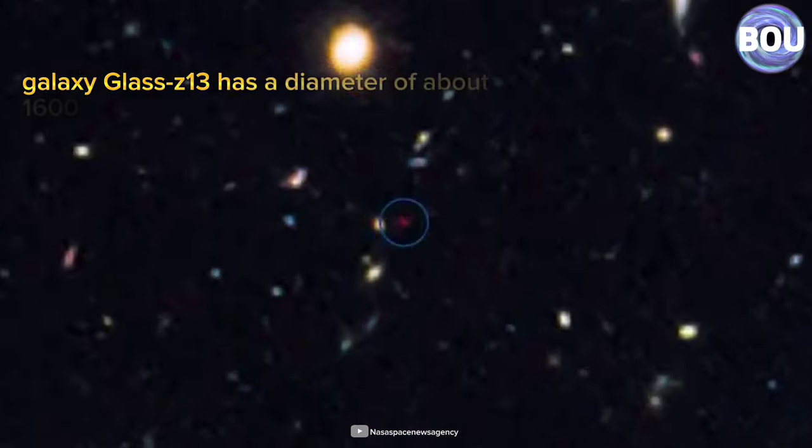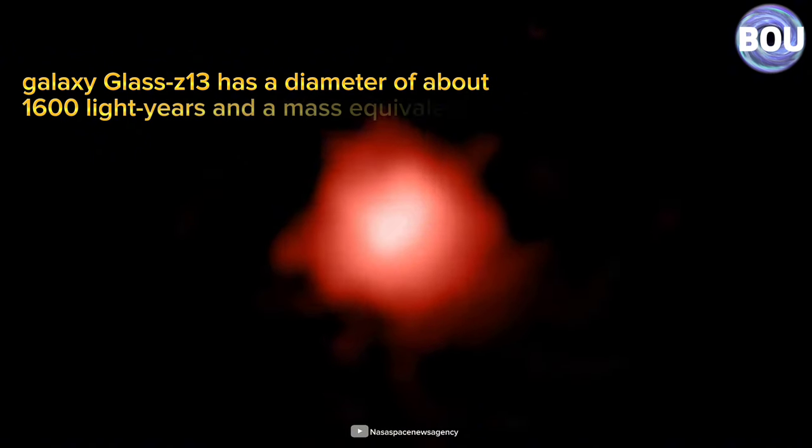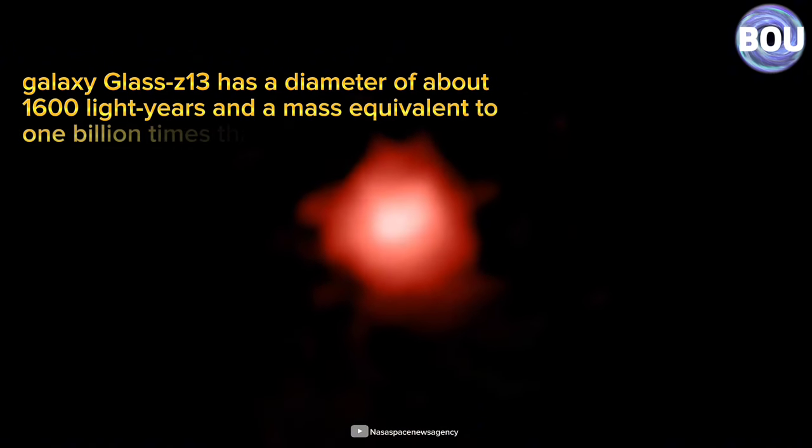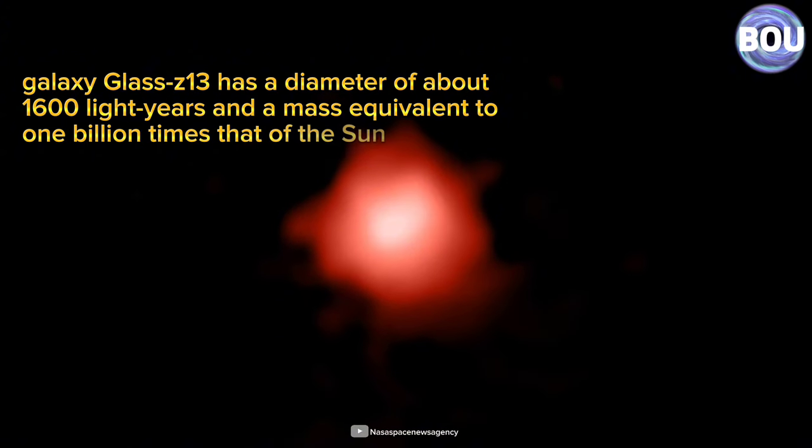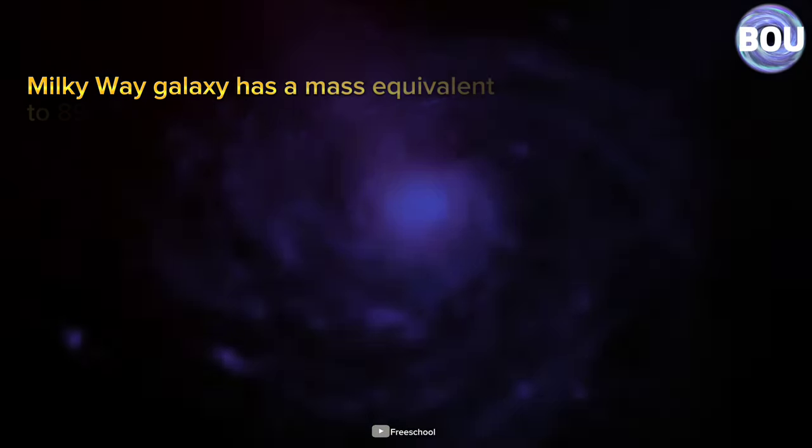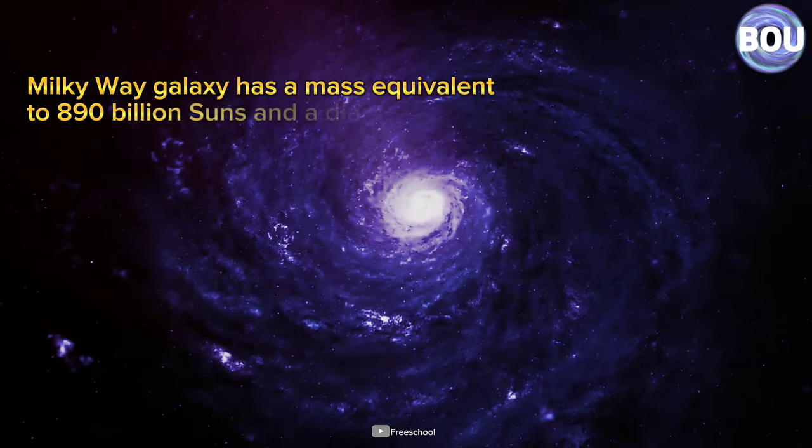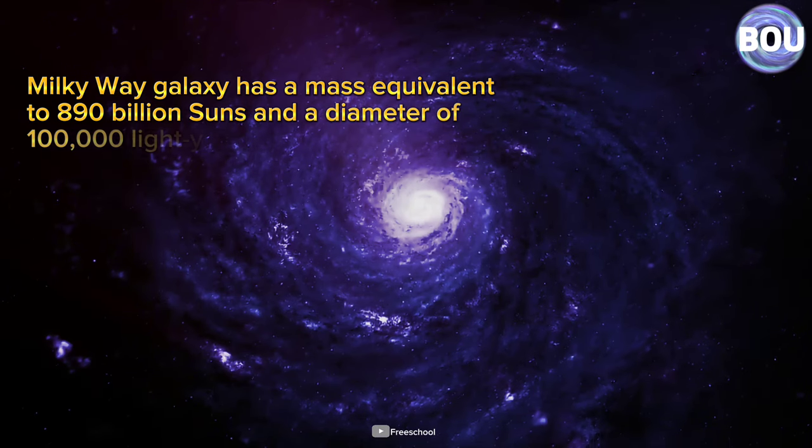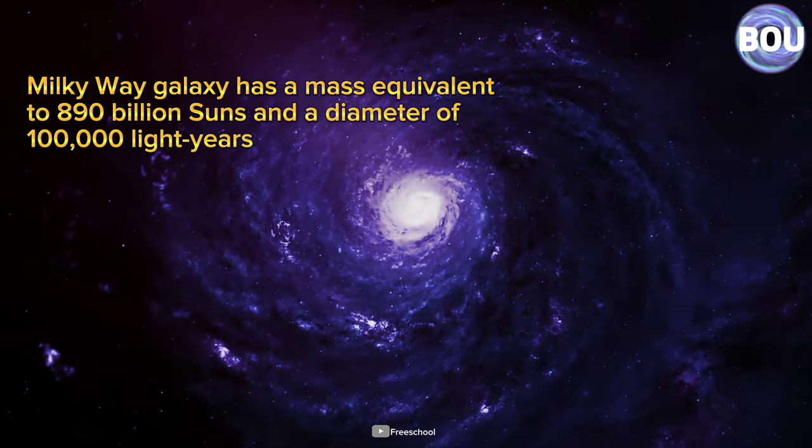The galaxy Glass Z13 has a diameter of about 1,600 light years, and a mass equivalent to one billion times that of the Sun. Whereas the Milky Way galaxy has a mass equivalent to 890 billion suns, and a diameter of 100,000 light years.